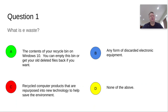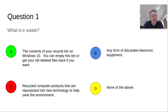Question one starts nice and simple. What is e-waste? Is it A, the contents of your recycle bin on Windows 10 — you can empty this bin to get rid of files or restore them by taking them out? Is it B, any form of discarded electronic equipment? Is it C, recycled computer products that are repurposed into new technology to help save the environment? Or is it D, none of the above? Pause it.